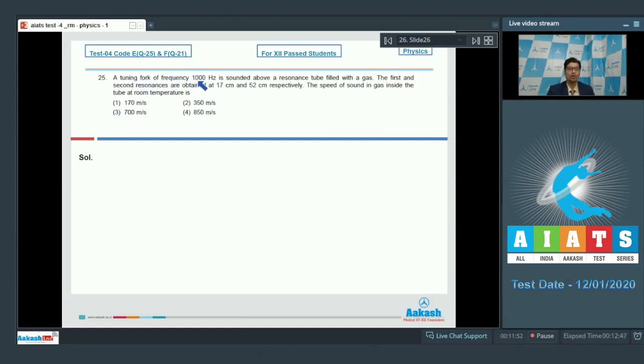Question number 25 says, a tuning fork of frequency 1000 Hz is sounded above a resonance tube filled with a gas. The first and second resonances are obtained at 17 cm and 52 cm respectively. The speed of sound in gas inside the tube at room temperature is.